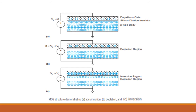In inversion mode, the applied gate voltage is greater than the threshold voltage, meaning a very high positive potential is applied. More positive charge carriers accumulate at the gate, which in turn attracts the minority carriers of the P-type substrate. For a P-type body, holes are majority carriers and electrons are minority carriers. These electrons form an inversion region below the silicon dioxide insulator. This mode is called inversion mode.